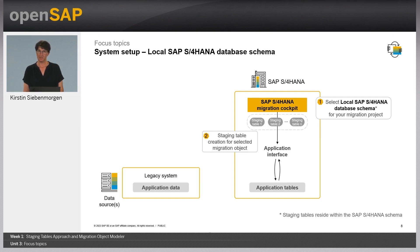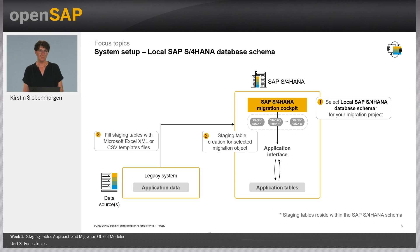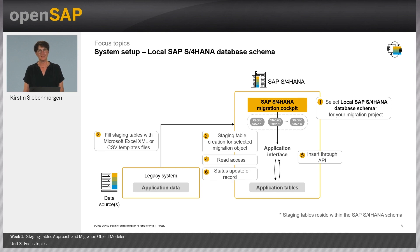As soon as you select migration objects for your project, the staging tables are created in the dedicated SAP S4HANA schema. You then fill the staging tables with either XML or CSV template files. When you start the simulation or migration, the Migration Cockpit reads the data in the staging tables and inserts it through the application interfaces to the application tables. As a last step, there is a status update for each record in the staging tables indicating it has been processed.